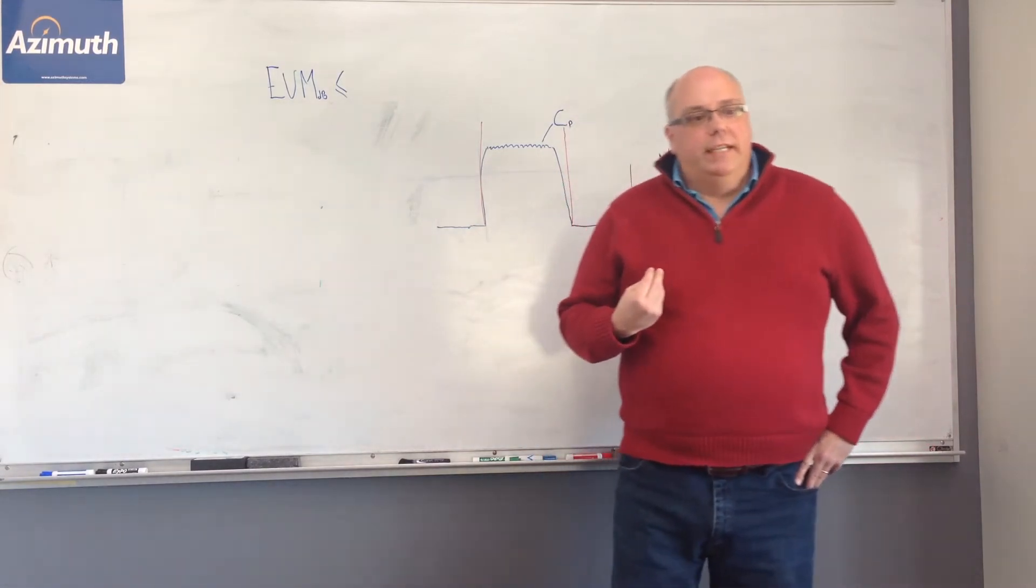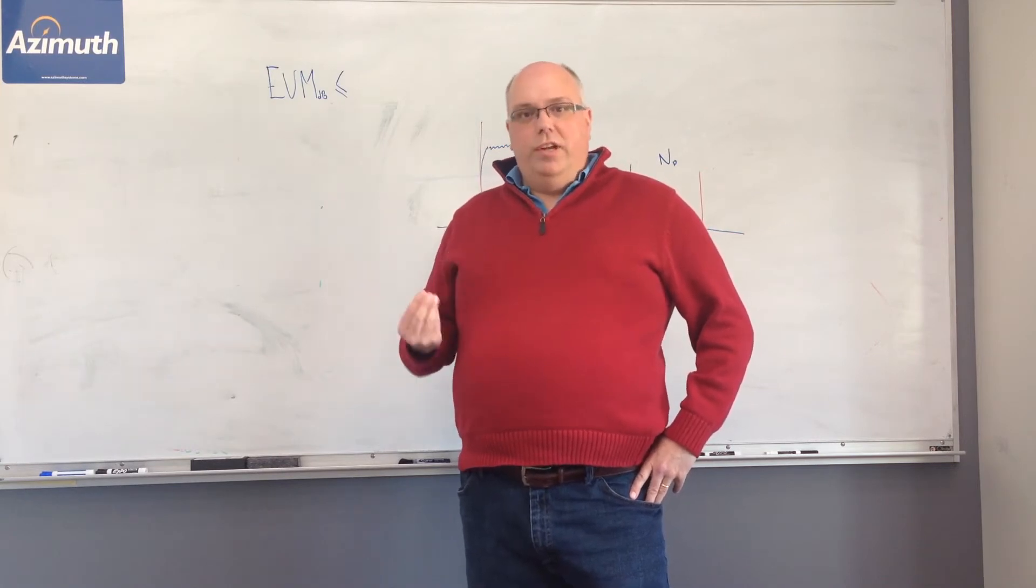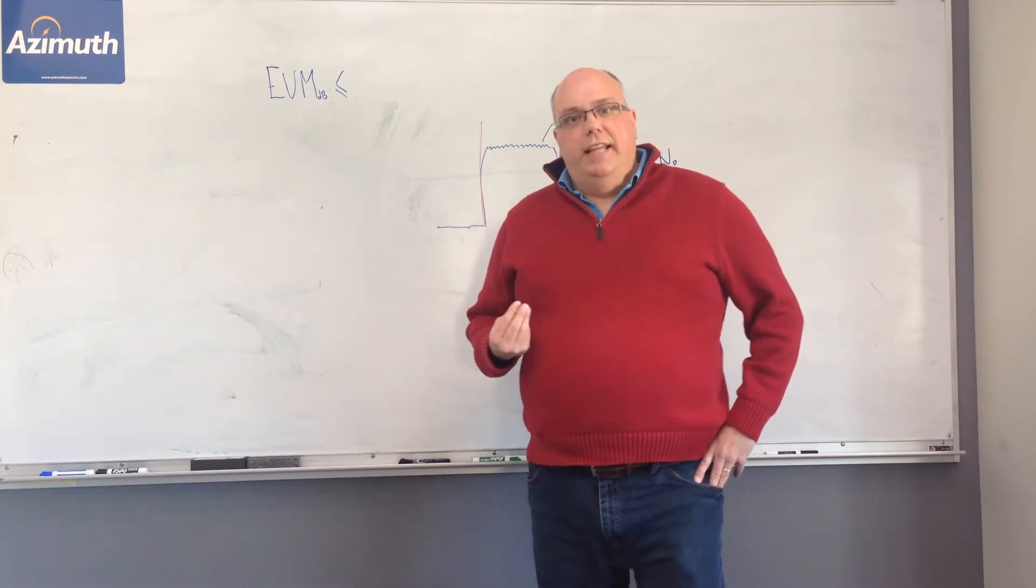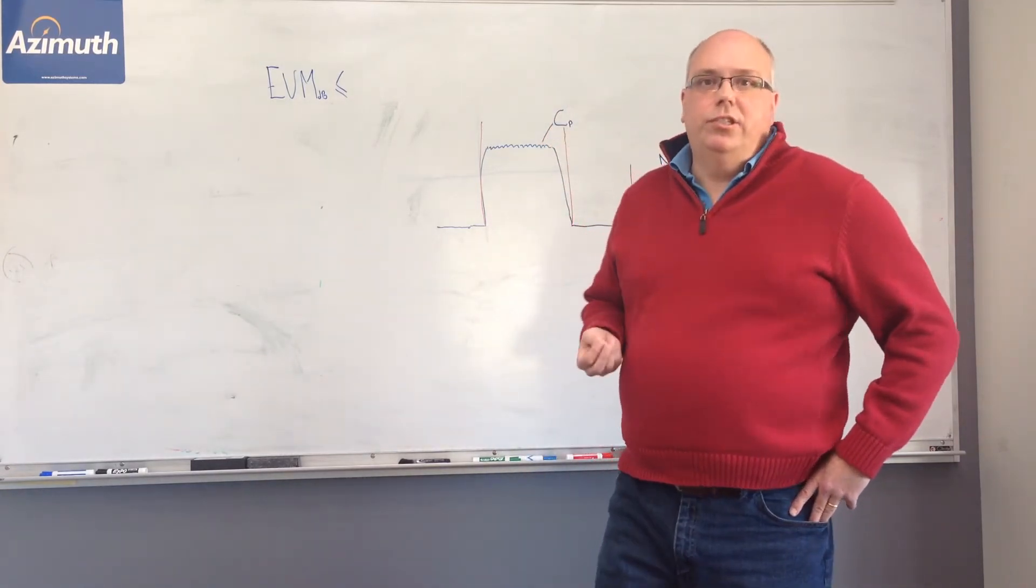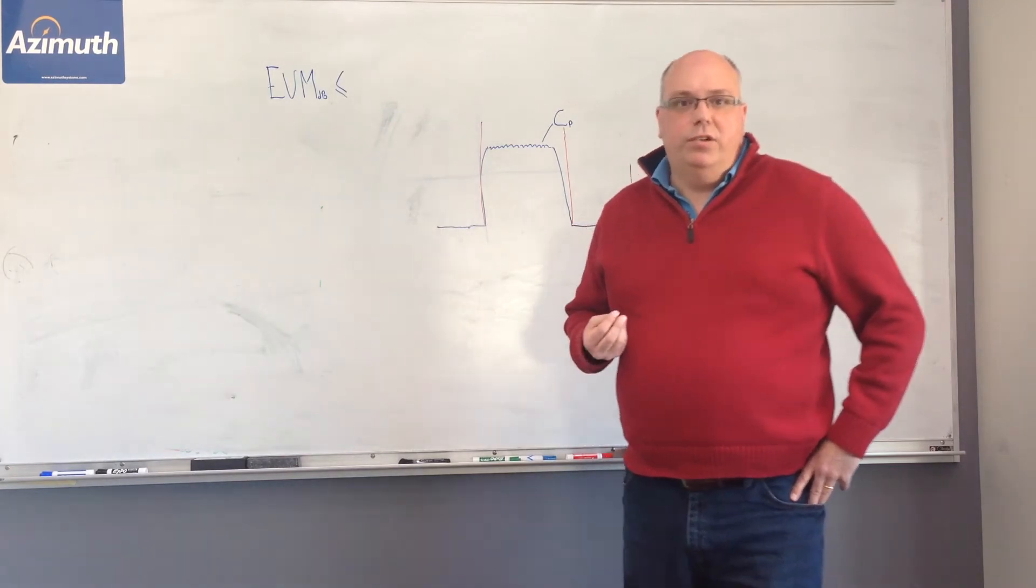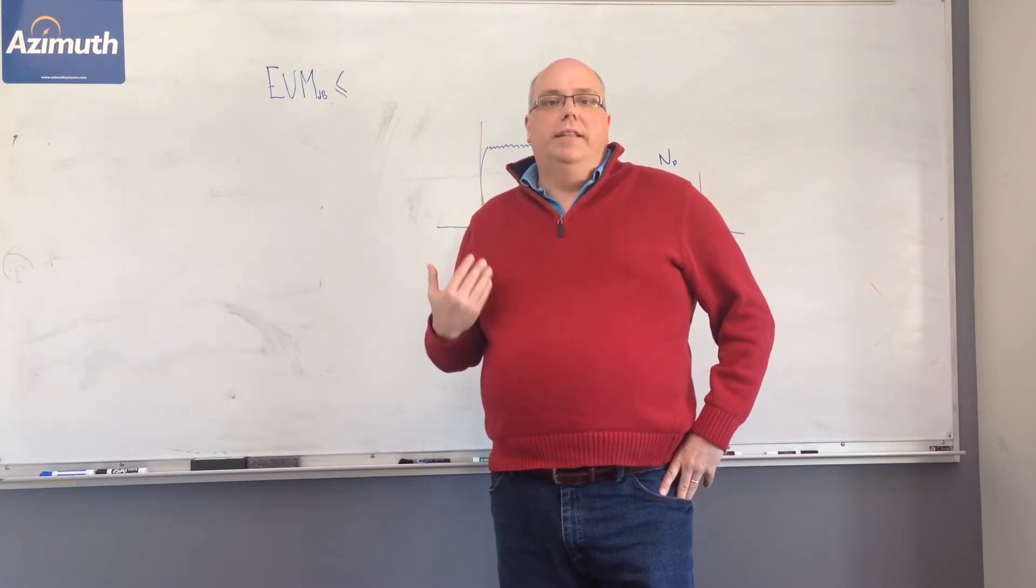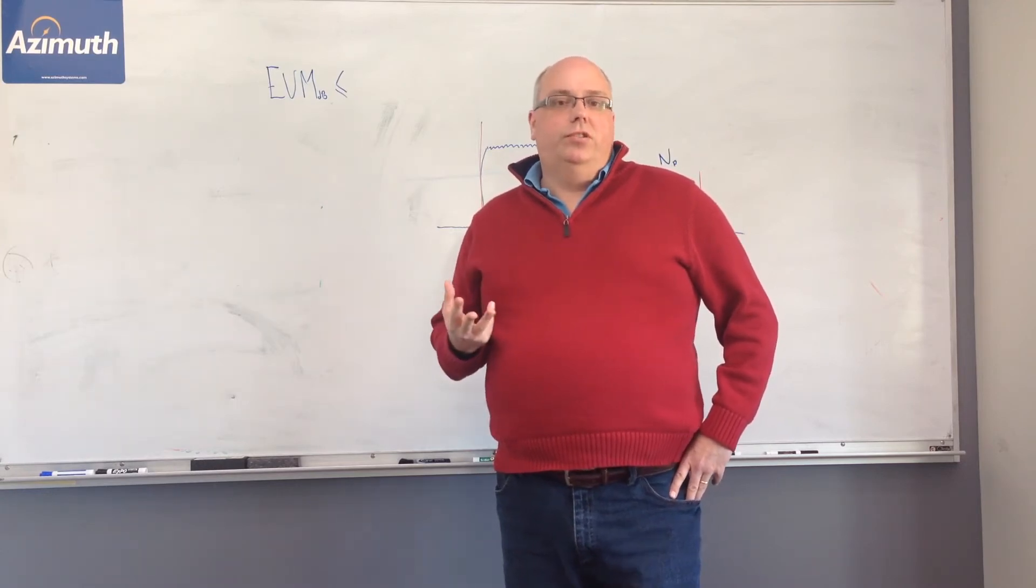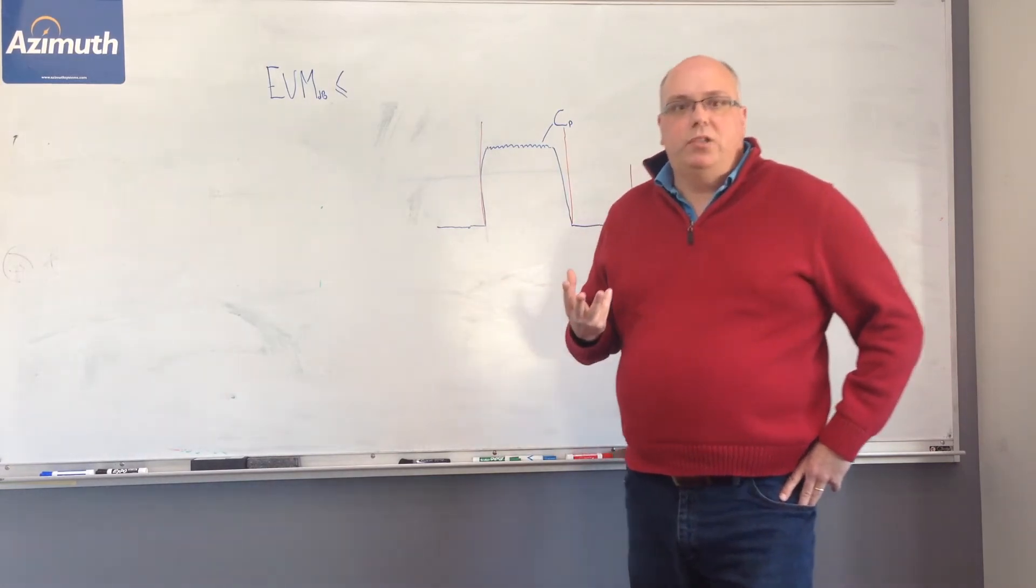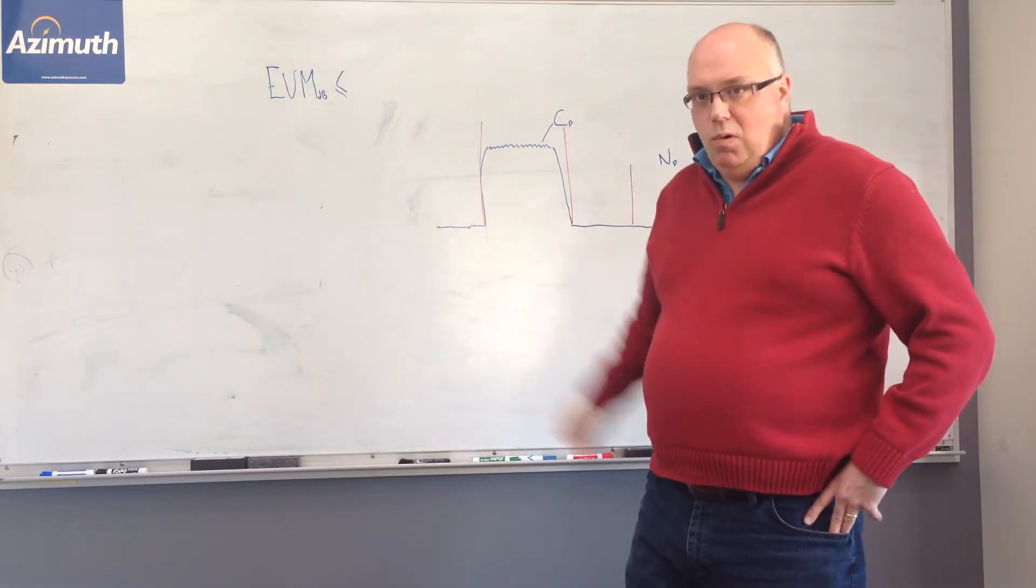But sometimes you don't have a vector signal analyzer available to you. And as a result, what are you going to do to assess link quality? And there's another metric that's used in RF measurements called a carrier-to-noise ratio measurement. Much easier to do. The equipment that's used to do that measurement is readily available. It's basically a spectrum analyzer. And it's sort of illustrating it here on the board.